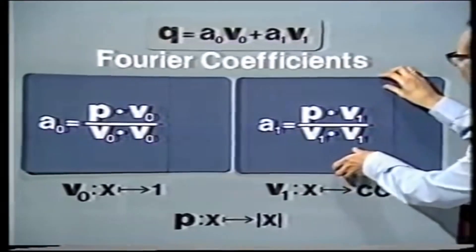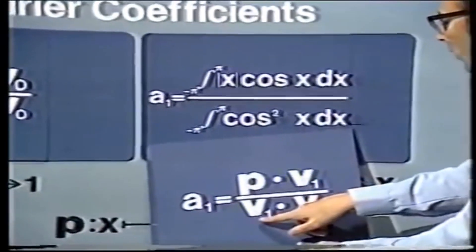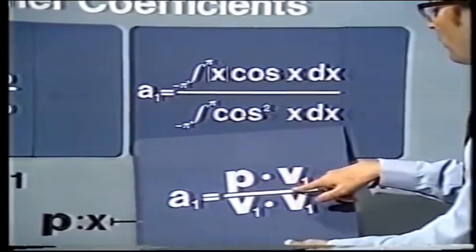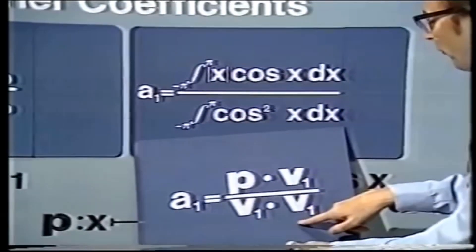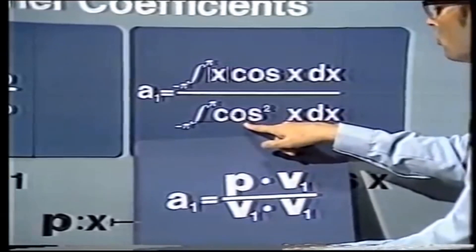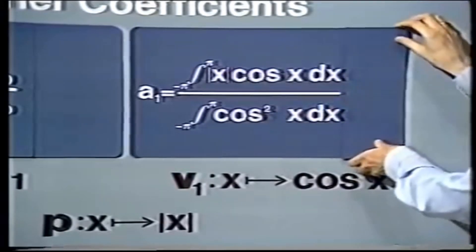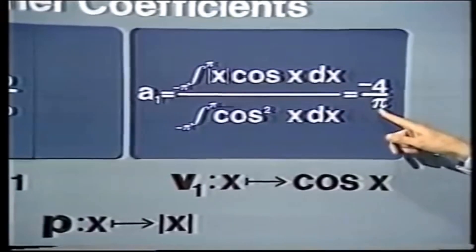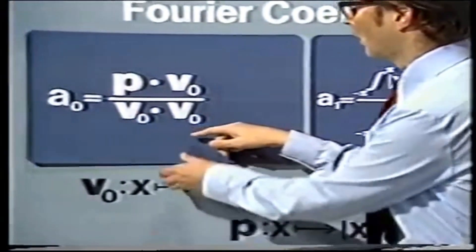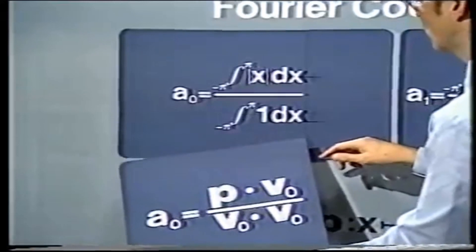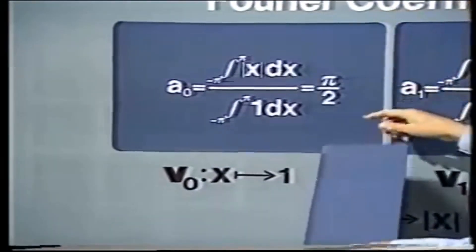So what we've got to do now is to find the corresponding Fourier coefficients A0 and A1. Let's look at A1. We've got to calculate P dot V1 and V1 dot V1. P dot V1 is just the integral of P times V1, and V1 dot V1 is just the integral of cos squared. So A1 is just this quotient of integrals, and if you work it out, what you get is minus 4 over pi. And we can do exactly the same thing for A0 — it's a quotient of integrals, and if you actually work out these integrals, the answer turns out to be pi over 2.